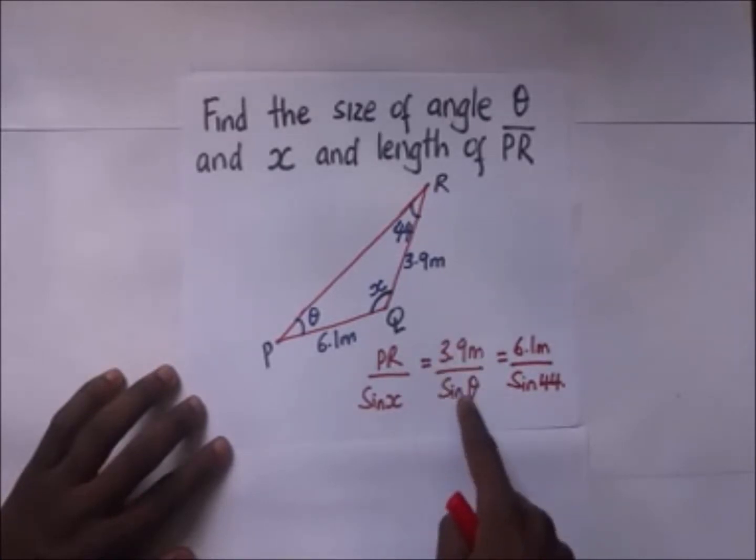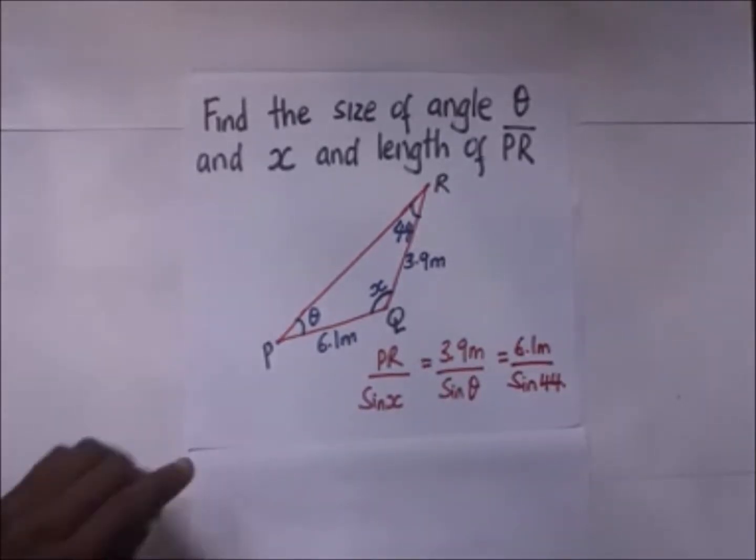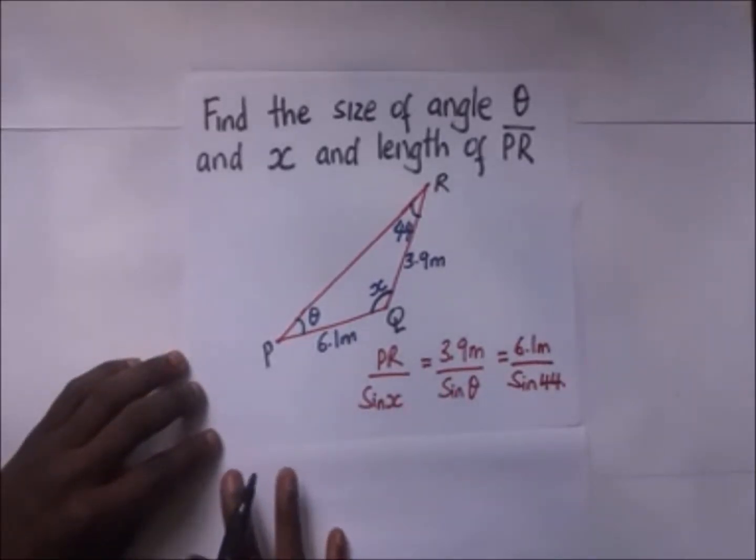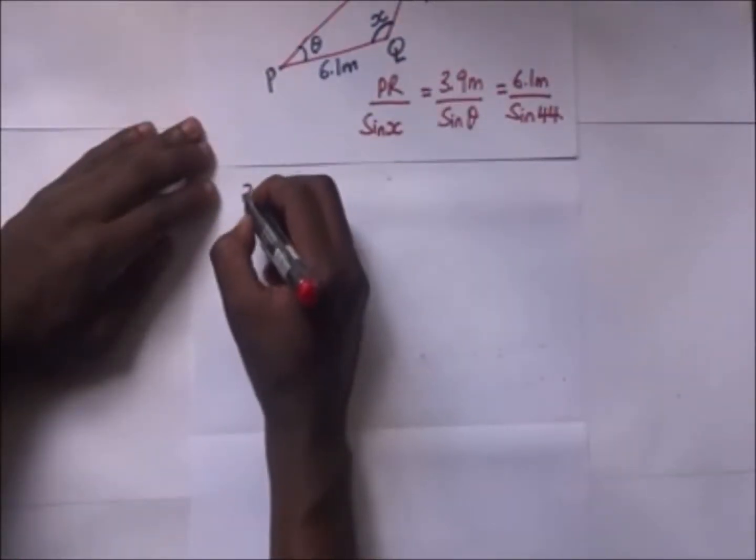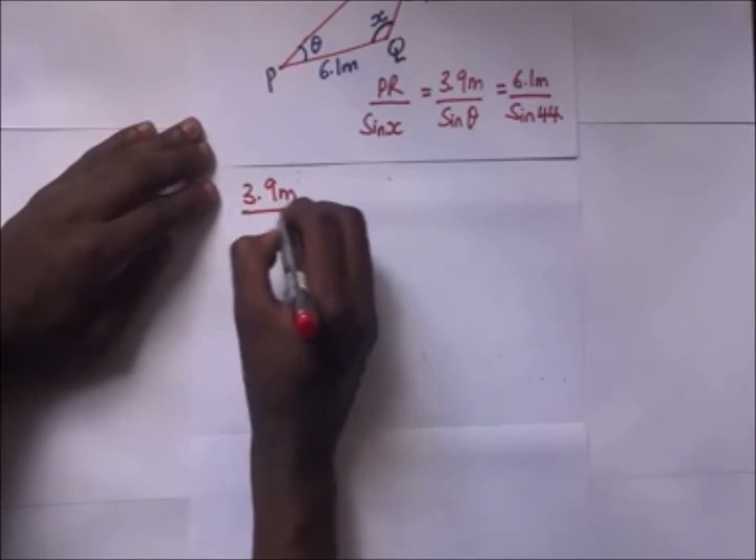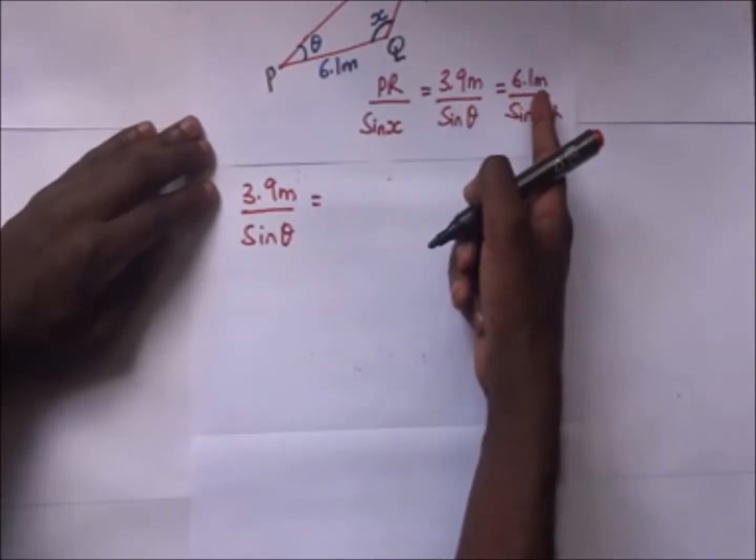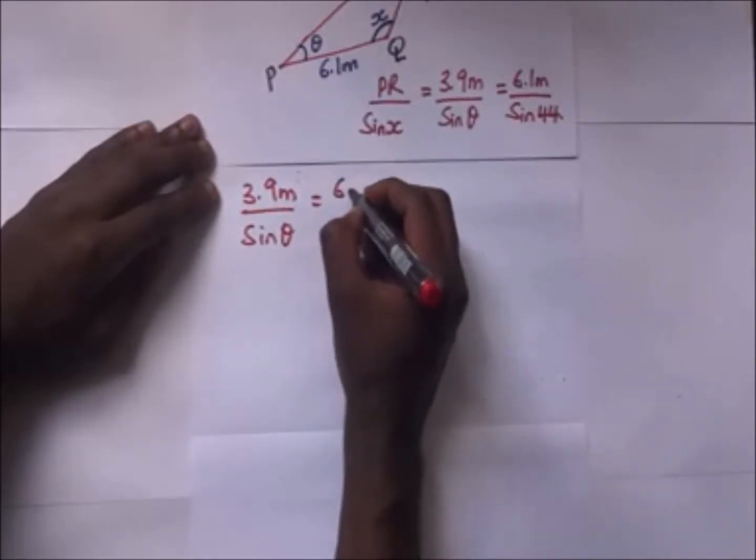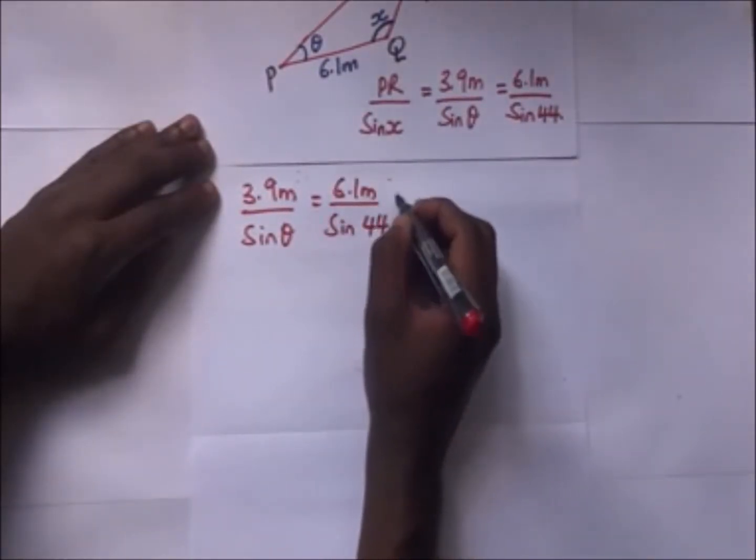Now if you look at this relation, if we equated this to that we can get theta because when we equate this to that theta is the only unknown that we have. So we begin off. So 3.9 over the sine of theta is going to be equal to 6.1 over sine of 44.